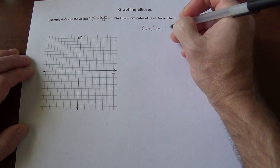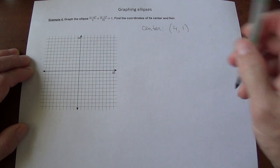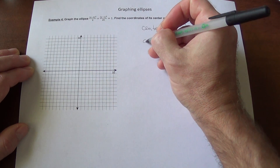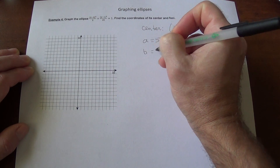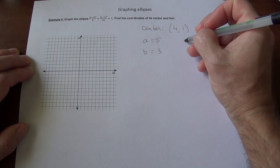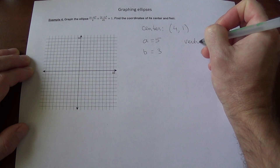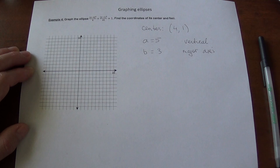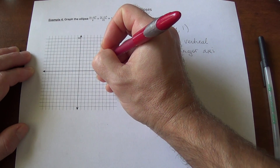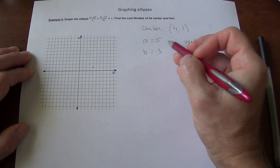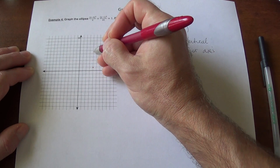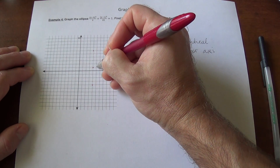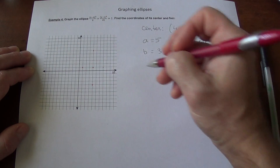We start with the center at (4, 1). We can see a equals 5 and b equals 3. Since a squared is located under y, our major axis is vertical. We plot the center, then go 5 units up and 5 units down for the major axis, and 3 units to the left and to the right for the minor axis. Then we connect the points.